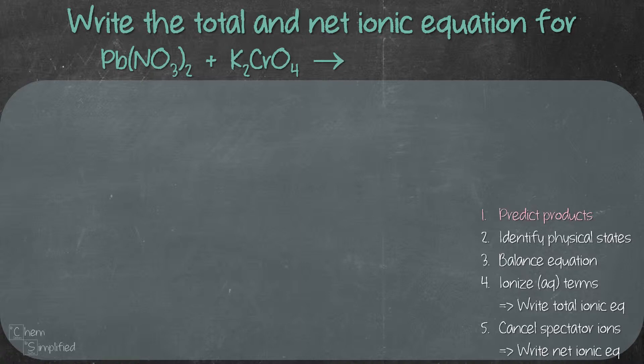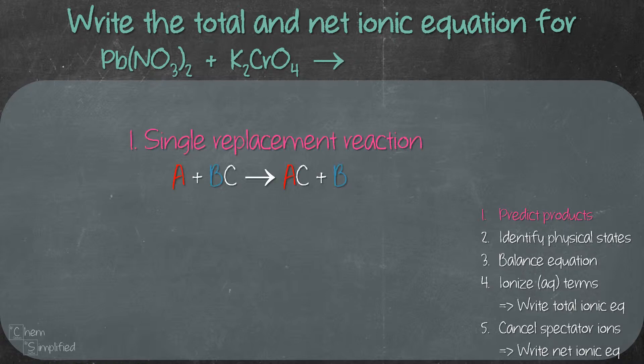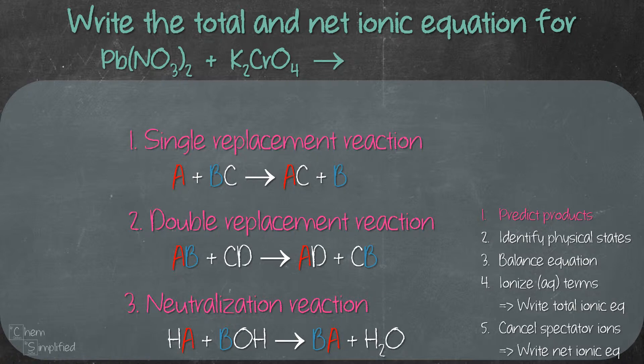The first thing we need to do is predict the products. Before we can do that, we need to know what kind of reaction these reactants will undergo. Generally, there are three types of reactions involved in ionic equations. The first is single replacement, where A and B swap places. The second type is double replacement, where AB and CD swap places. The third reaction is neutralization, where acid and base HA and BOH react together, get neutralized, and form salt BA and H₂O.